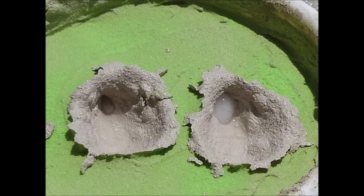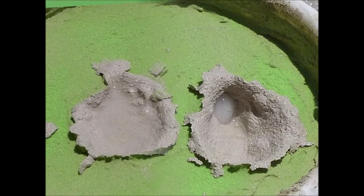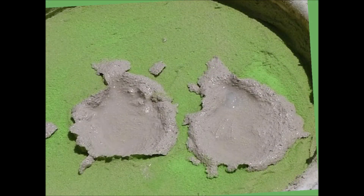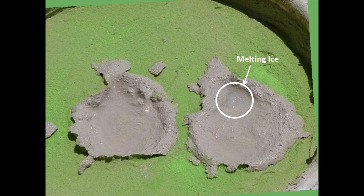These inclined impact cavities were made by oblique impacts of ice projectiles on a viscous target. We can see that the depth of the cavities has been reduced by viscous relaxation and that the ice projectiles have almost melted. The overturned flaps created by the impact are modified into raised rims. A small piece of ice can still be seen. After the ice melts, there is no evidence of the projectile.